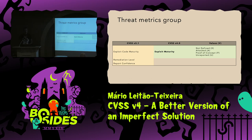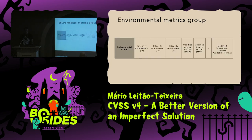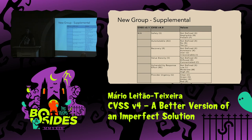You can now define the confidentiality, integrity, and availability parameters in terms of these two different systems. Then you get exploit maturity — the only parameter in the threat metrics group — to define how a vulnerability is currently being exploited in the wild. The environmental metrics group allows the consumer to modify the metrics according to their specific environment, and supplemental metrics provide additional extrinsic characteristics of the vulnerability, covering sectors not properly addressed by the other parameters.